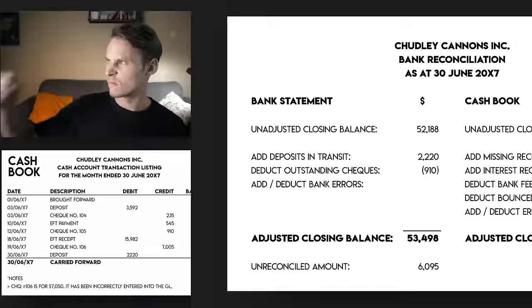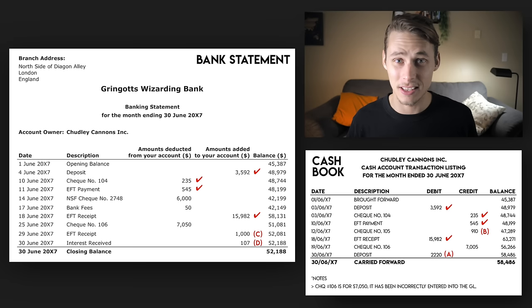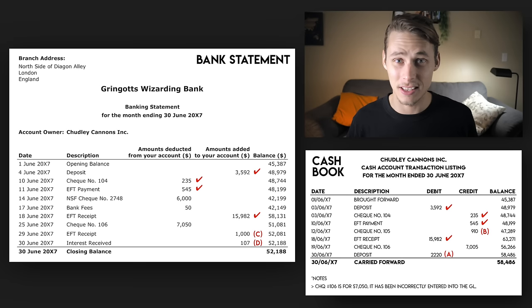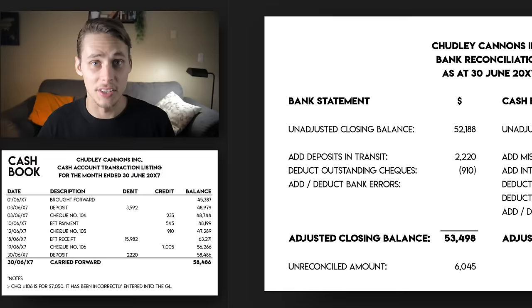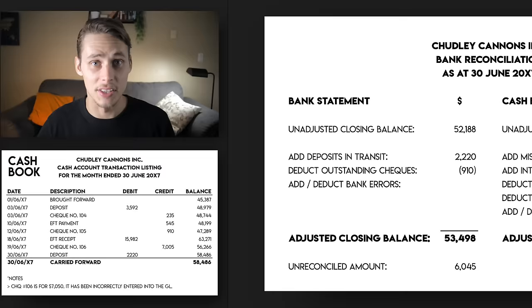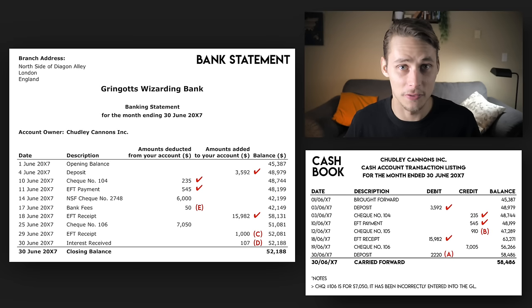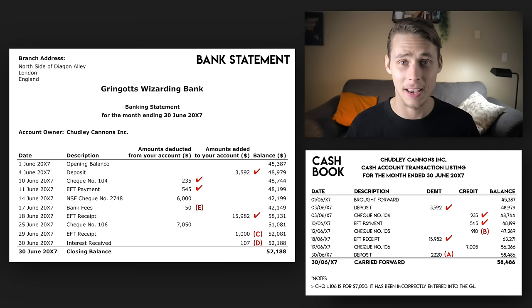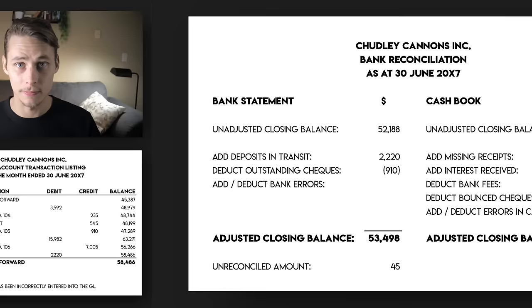Bank fees — these are costs the bank charges us for keeping our account open. $50 was deducted from our account on the 17th of June and hasn't been included in our cash book. We label this transaction E and deduct it from our cash book balance. The last omission we're looking for is bounced cheques — cheques that customers sent us and we deposited, only for them to be rejected because the customer didn't have sufficient funds. This is normally labeled an NSF check, which stands for not sufficient funds. We can see one in the bank statement: NSF cheque 2748 — the bank has deducted $6,000 from our account. We reference this as transaction F and deduct it from our cash book balance.